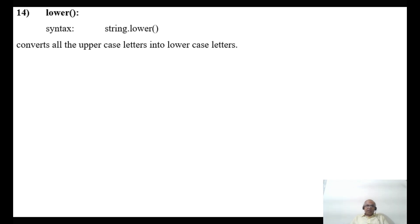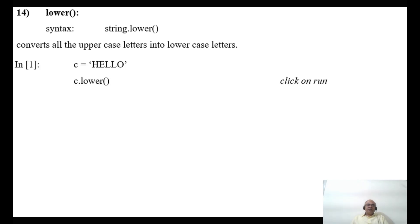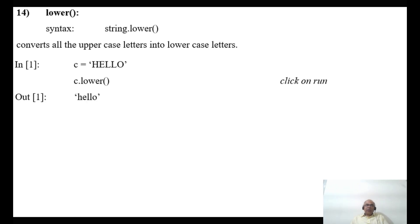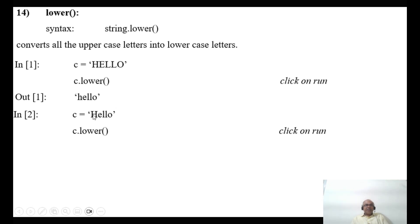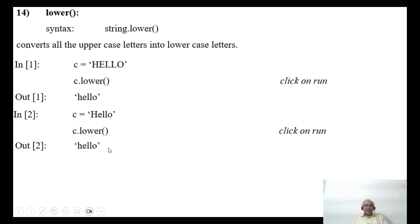Similarly, string.lower() converts all uppercase letters into lowercase letters. If any character is already in lowercase, it remains the same. For example, if c = 'HELLO', then c.lower() gives 'hello'. If c = 'Hello' (only H is capital), then c.lower() converts just the capital H to lowercase, giving 'hello'.